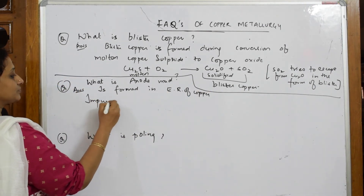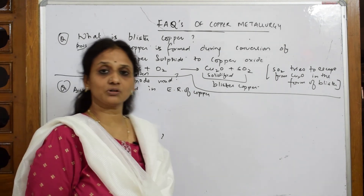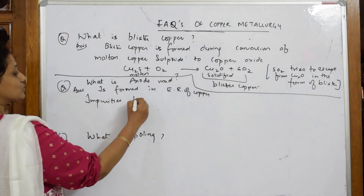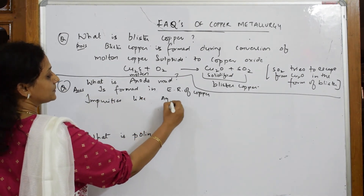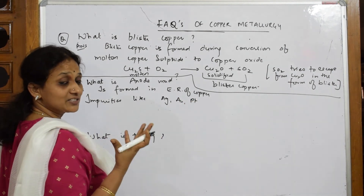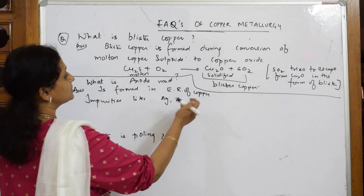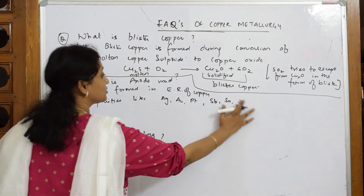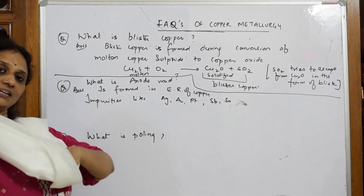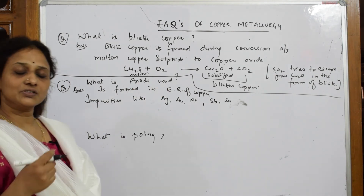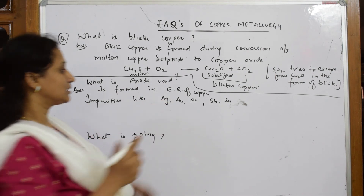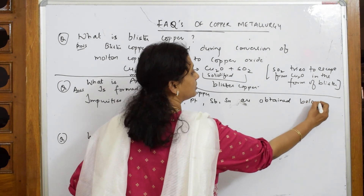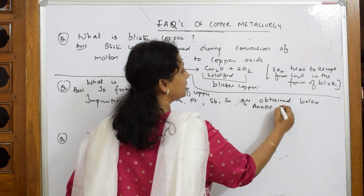In electrolytic refining, impure metal is taken as the anode and pure metal as the cathode. During electrolysis, the impurities — trace amounts of silver, gold, platinum, antimony, and tin — are obtained below the anode. These are called anode mud.